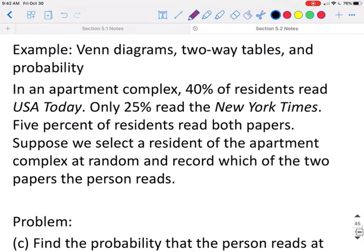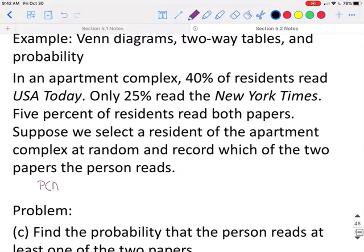The other way to do this is the probability of A or B, which is the probability of event A plus the probability of event B minus the probability that it is in both categories. So the probability that they read USA Today is 40%. The probability they read the New York Times is 25%. And the probability that they read both is 5%. And if we do that, you will still get 60% of the people who read at least one of the newspapers.